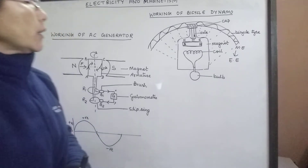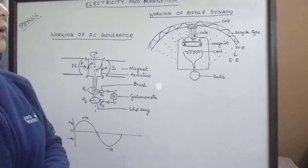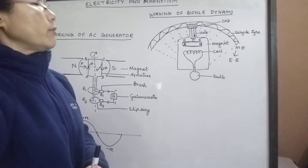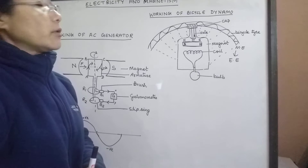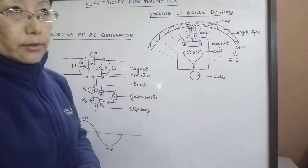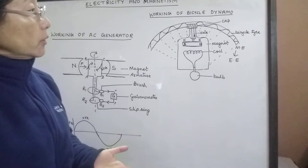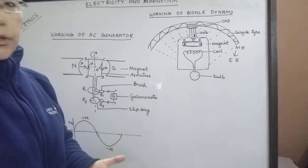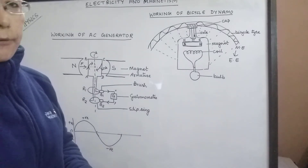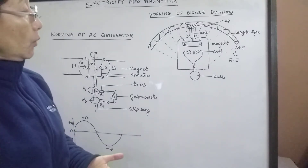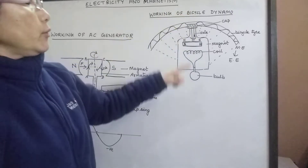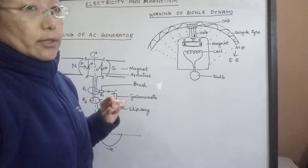Now we will see the working of a bicycle dynamo. A bicycle dynamo is a device which converts mechanical energy into electrical energy. It works according to the principle of electromagnetic induction. This is the device which is used in a bicycle to produce light.